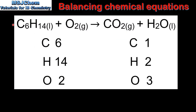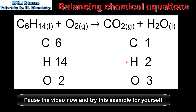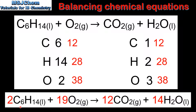In our next example we have the unbalanced equation for the reaction of hexane C6H14 with oxygen to produce carbon dioxide and water. In the reactants we have six carbon atoms, fourteen hydrogen atoms and two oxygen atoms. In the products we have one carbon, two hydrogen and three oxygen atoms. To balance this equation we need to put two in front of the hexane, nineteen in front of the oxygen, twelve in front of the carbon dioxide and fourteen in front of the water. We now have the same number of atoms in the reactants and the products.